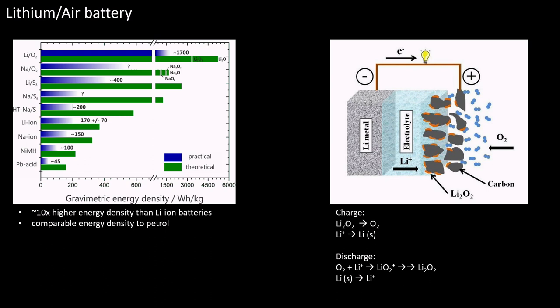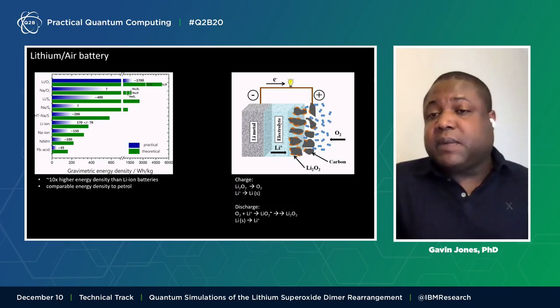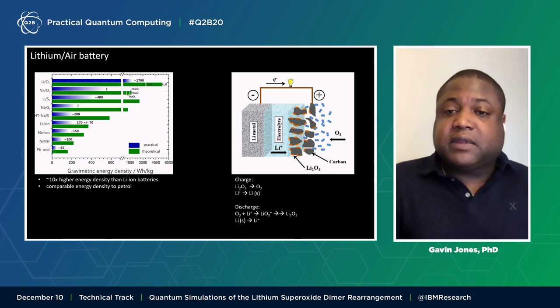The lithium air battery operates in the following way. During charge, lithium peroxide converts into molecular oxygen and lithium ions plate the lithium anode. During discharge, molecular oxygen combines with lithium ion formed from the lithium anode to initially form lithium superoxide and eventually lithium peroxide at the cathode. In today's presentation, I will describe how to model one portion of the discharge process involving the formation of lithium peroxide from lithium superoxide.